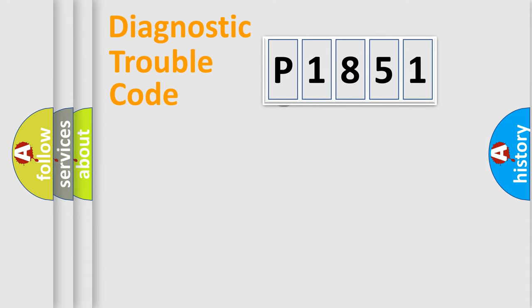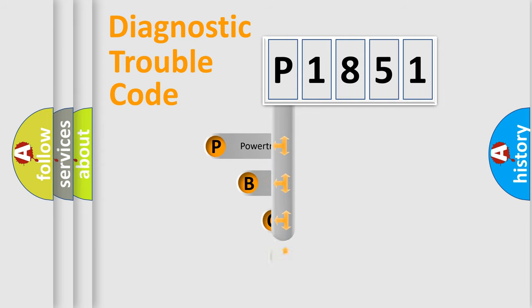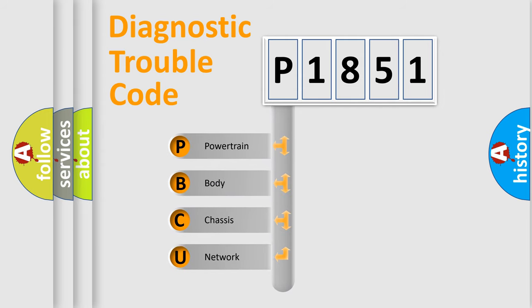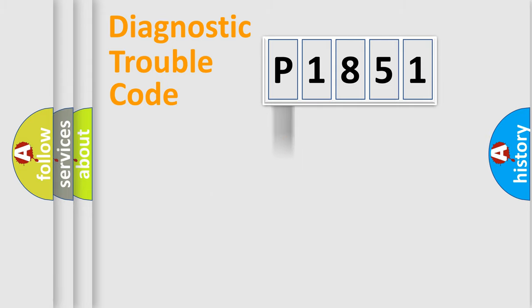First, let's look at the history of diagnostic fault code composition according to the OBD2 protocol, which is unified for all automakers since 2000. We divide the electric system of an automobile into four basic units: Powertrain, Body, Chassis, and Network. This distribution is defined in the first character of the code.